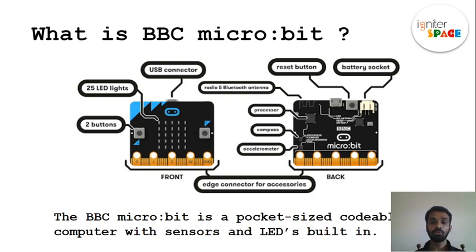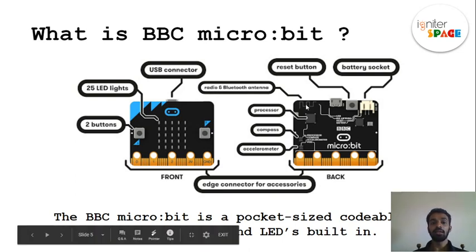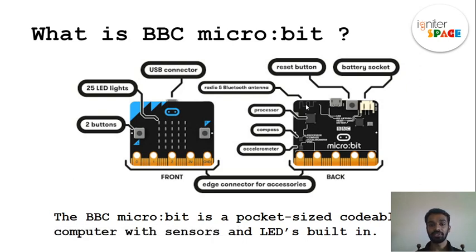We also have radio and Bluetooth antennas — this small component can receive and send Bluetooth and radio signals. Then there is a reset button, which we use when we need to reset the program running on the Micro:bit.